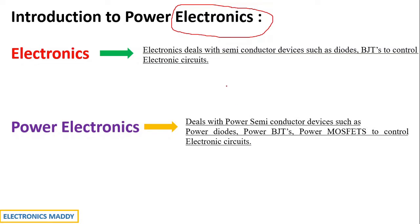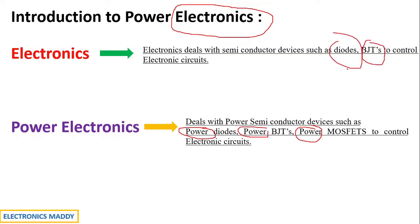What is the fundamental difference between these two? The power semiconductor devices are the major difference with respect to normal diodes or semiconductor devices. If you carefully observe, I've used the word 'power' throughout — whereas these are normal diodes, normal BJTs, and normal MOSFETs.